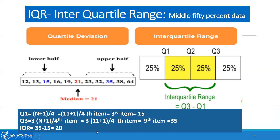IQR, or interquartile range, equals Q3 minus Q1 — basically the middle 50% of the data. Looking at this diagram, suppose this is the entire data set. As I already mentioned, three quartiles divide the data into four equal parts. Q1 divides the data so that 25% is below and 75% is above. Q2, which is our median, divides the data into 50% below and 50% above. Q3 divides the data so that 75% is on one side and 25% on the other. IQR represents 50% of the data.